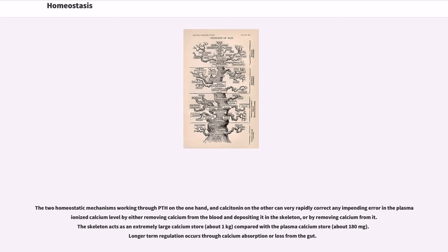The two homeostatic mechanisms working through PTH on the one hand, and calcitonin on the other, can very rapidly correct any impending error in the plasma ionized calcium level by either removing calcium from the blood and depositing it in the skeleton, or by removing calcium from it. The skeleton acts as an extremely large calcium store — about 1 kg — compared with the plasma calcium store of about 180 mg. Longer term regulation occurs through calcium absorption or loss from the gut.